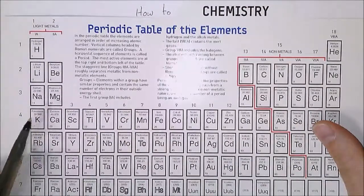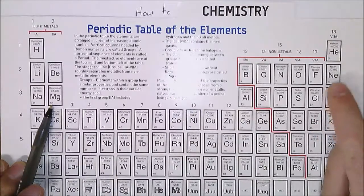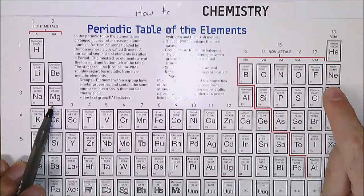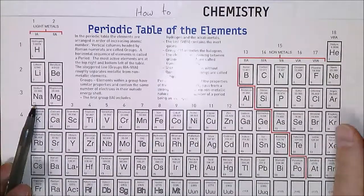The reason it'll be a plus 2 is because 12 wants to be like its nearest noble neighbor, neon 10. It's going to lose two electrons.